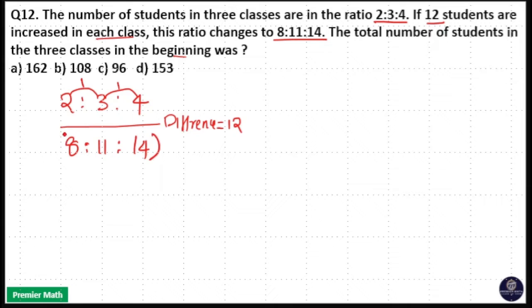So multiply it with 8:11:14. Same way, take the difference between 8 and 11, that is 3. The difference between 11 and 14 is also 3. So multiply it with 2:3:4.